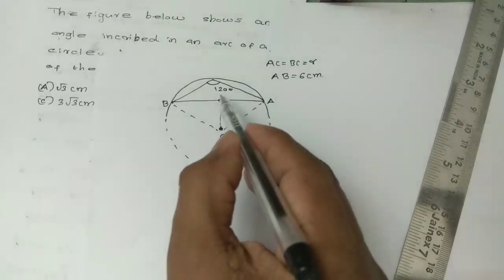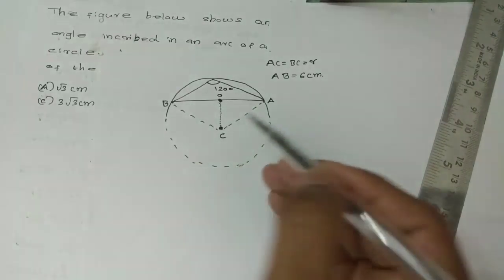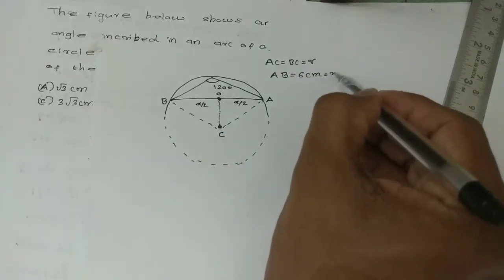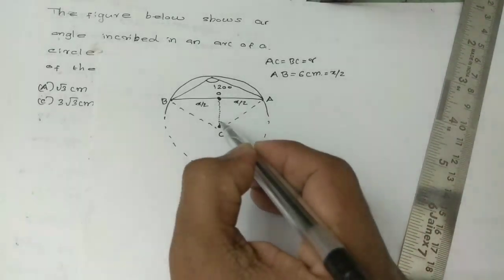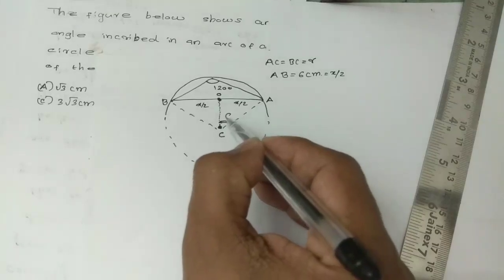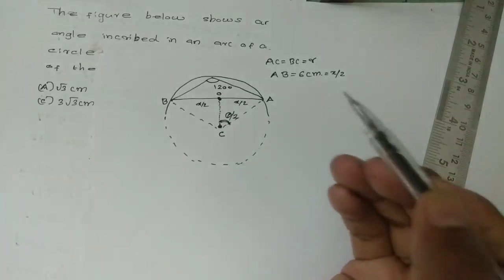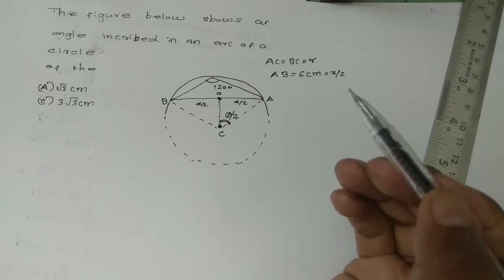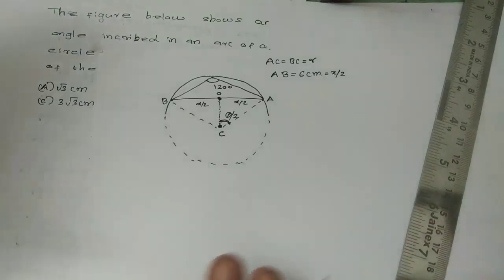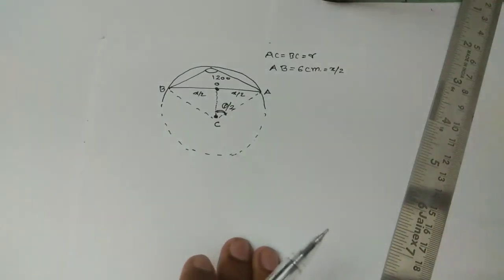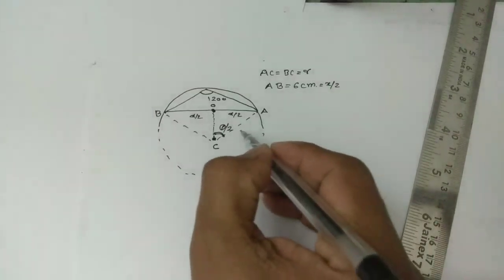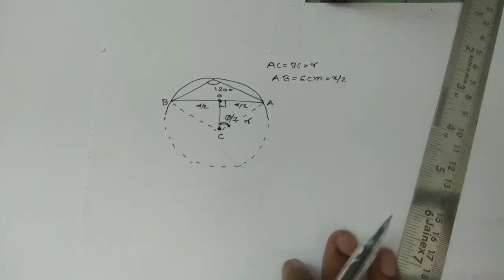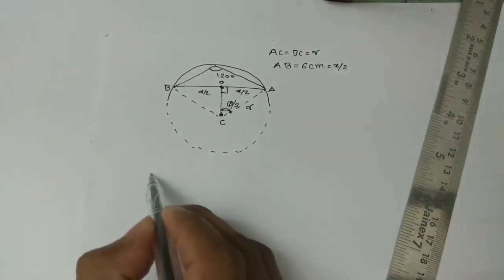This is theta by 2. This angle is theta by 2. This is r. So this is 90 degrees. This ABO triangle is a right angle.